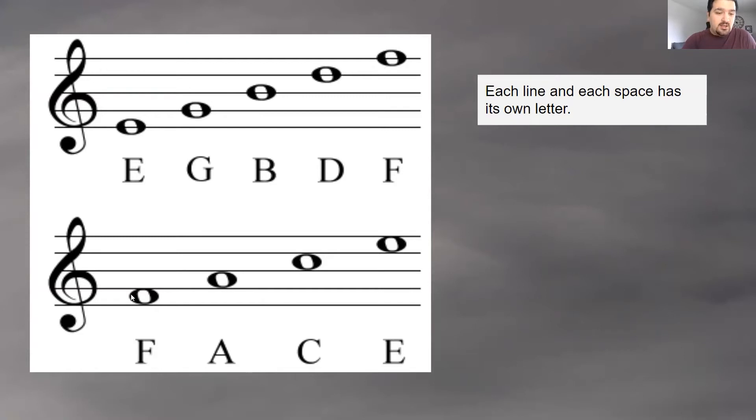Now, if you look at the spaces, the first space is the letter F. So that's the note F. The second space is the note A. The third space is the note C. And the fourth space, the top space, is the note E. Now, it's very funny. If you look at all the letters put together to spell the spaces, it spells FACE. So F, A, C, E from bottom to top spells FACE. That's how we know the code. Those lines and those spaces, whenever you put a note on them, tells us what note to play.